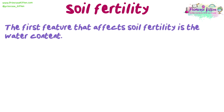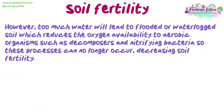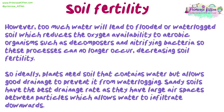The first feature that affects soil fertility is water content. Plants need water in the soil as it allows them to absorb dissolved inorganic ions such as nitrates and phosphates, which are essential for growth. Plants also need water for metabolic processes such as photosynthesis and to maintain the stability of their cells. Therefore, fertile soils will have a good water availability. However, too much water will lead to flooded or waterlogged soil, which reduces the oxygen availability to aerobic organisms such as decomposers and nitrifying bacteria, so these processes can no longer occur, decreasing soil fertility. Ideally, plants need soil that contains water but allows good drainage to prevent waterlogging.